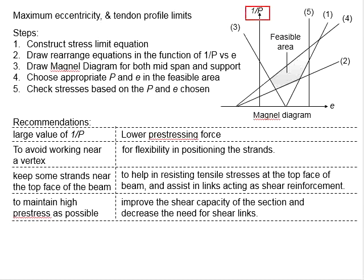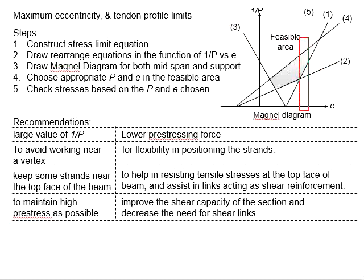The bigger value of 1/P will result in a smaller pre-stressing load acting on the member. For normal practice, we are looking for the smaller pre-stressing force as a more economical solution for pre-stressing members. Normally, we look at the higher regions of the visible areas. By taking advantage of the eccentricity, the magnitude of the pre-stressing load may be reduced.